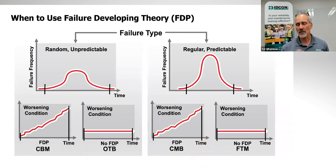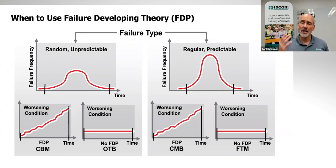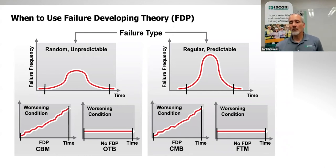There are some instances where we know the life but condition-based maintenance is very expensive to perform. For the most part, though, even if we know roughly what the life is, we typically do condition-based maintenance because it doesn't take a lot of time. If we know the life and we don't have a failure developing period, then we typically do fixed time maintenance.